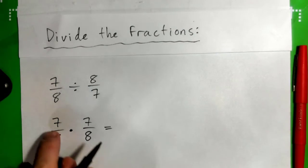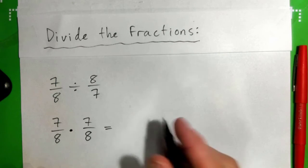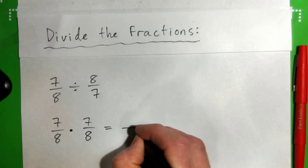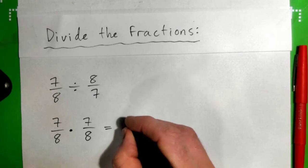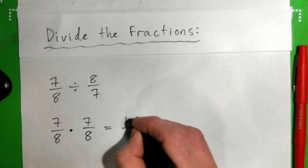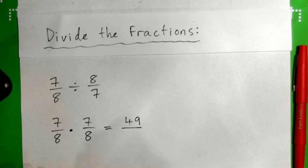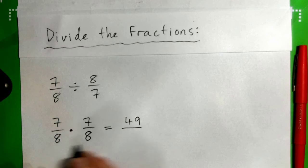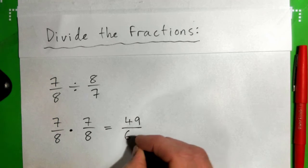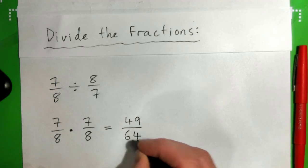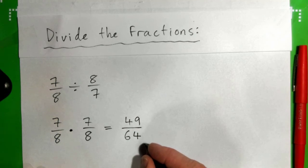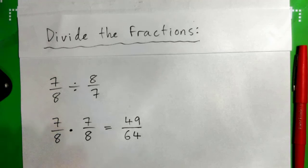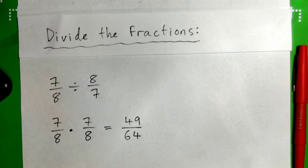So we just get 7 times 7, which is 49. And 8 times 8 is 64. So we have 49 over 64, and we're done. It can't be simplified further.